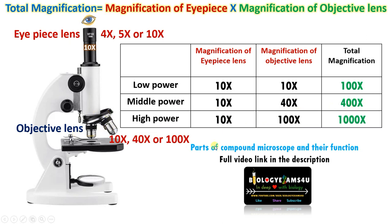Then rotate it to high power. At high power we are using the same eyepiece lens, which is 10x, and the high power objective has a magnification of 100x. Therefore total magnification will be 10x × 100x = 1000x. That's why the maximum magnification of a compound microscope is often given as 1000x — meaning the object appears one thousand times larger than the actual object.